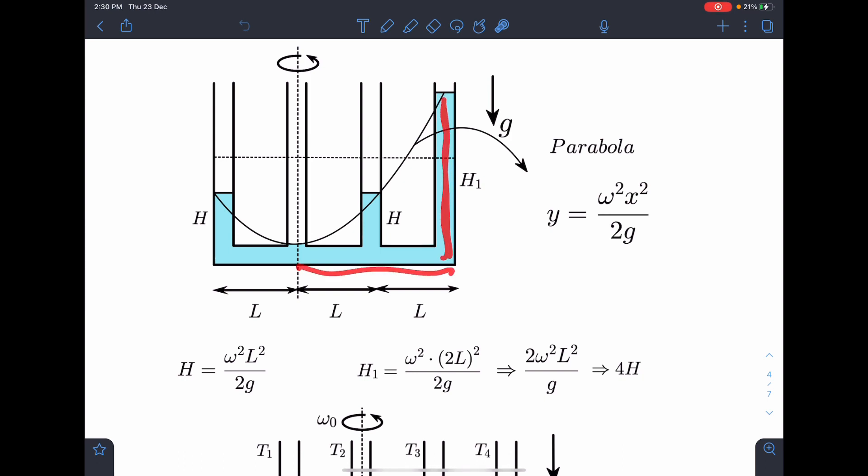And this h1 here, it is at a distance of 2L. So h1 becomes omega square times 2L whole square by 2g. So from here on simplifying, we are getting h1 equal to 4h. We are establishing a relation here between h and h1.